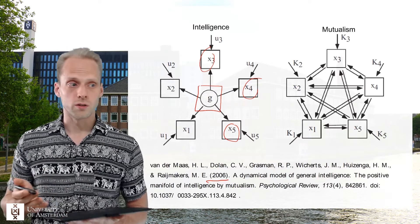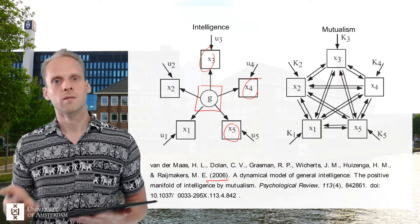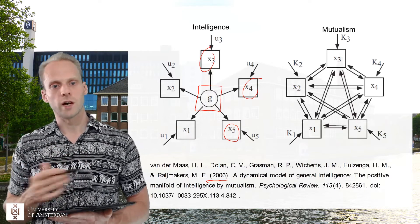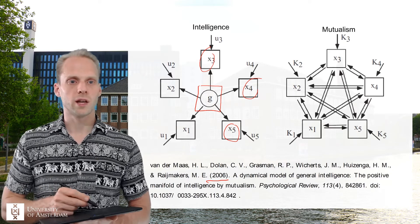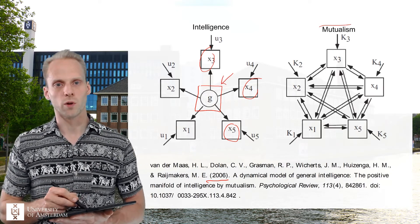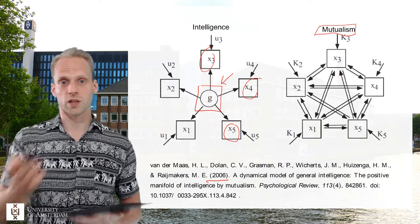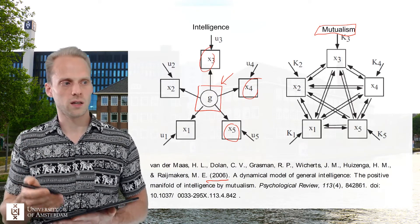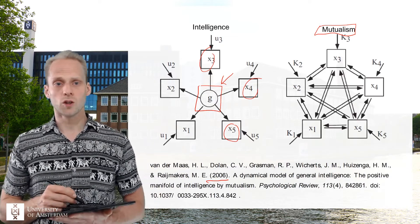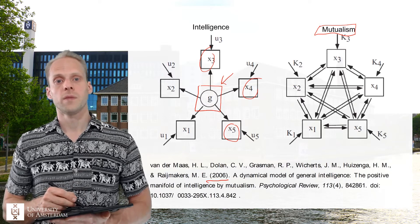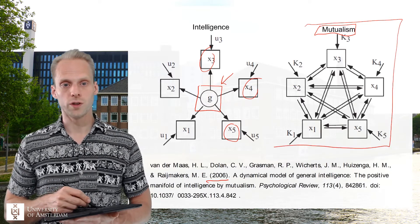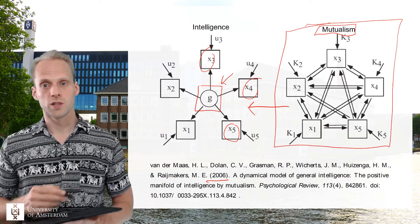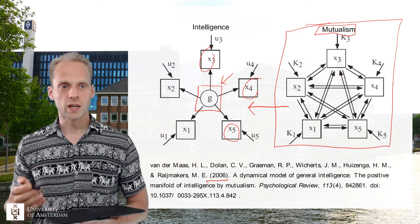The ecologists also see positive correlations in ecosystems — for example, in a lake you can have high oxygen in the water, plants in the water, and lots of fish, or all of these things low. But they don't explain that with a general factor for 'lake-ness.' Instead, ecologists explain it with a mutualism model, where all these things are mutually beneficial for each other. It turns out that if you simulate data under a mutualism model, you get exactly data that would fit a general factor model — showing there's an alternative explanation.